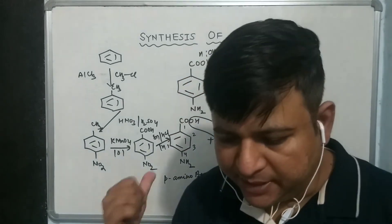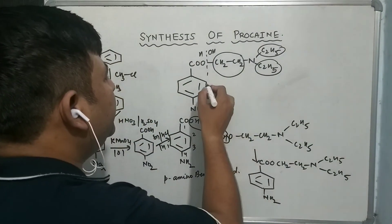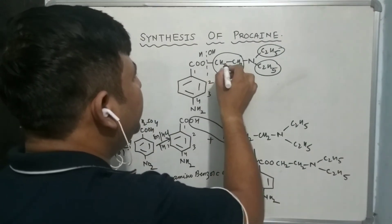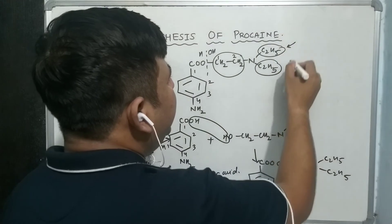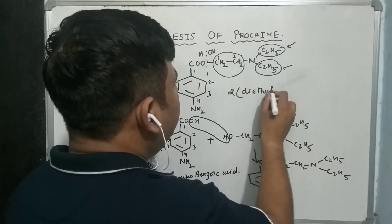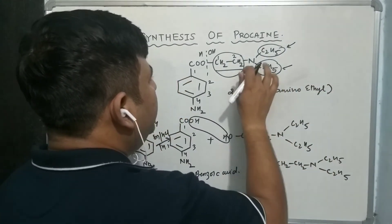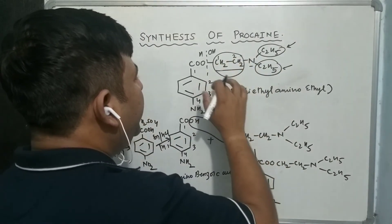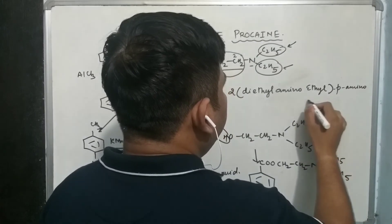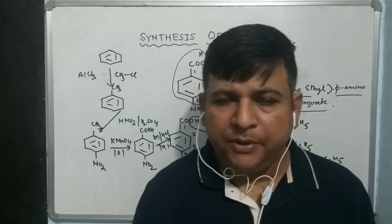Now I will discuss the IUPAC name of the drug. Looking at the structure: starting from the amino group, it is 4-aminobenzoic acid. What is joined here is a diethylaminoethyl group — so the IUPAC name is 2-(diethylamino)ethyl 4-aminobenzoate. That is the IUPAC name of procaine.